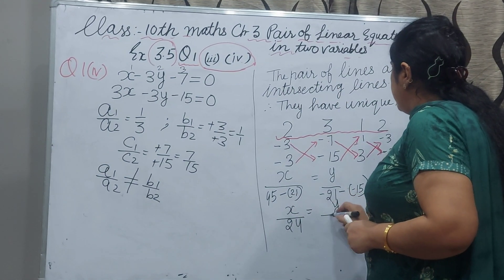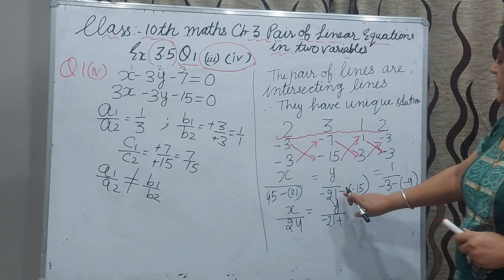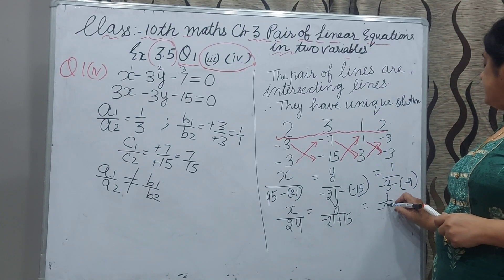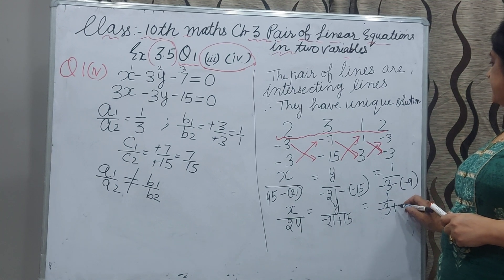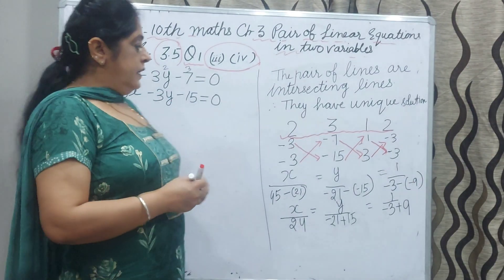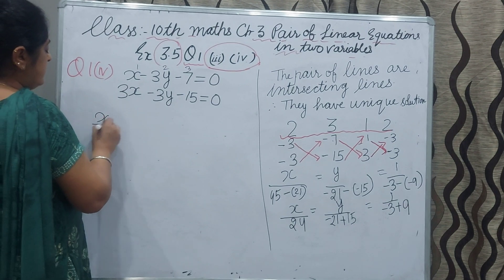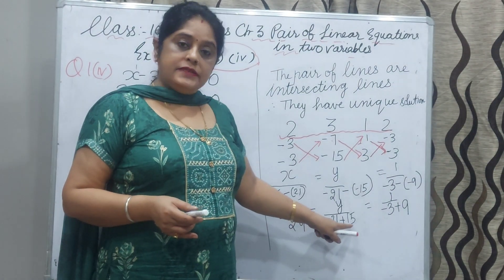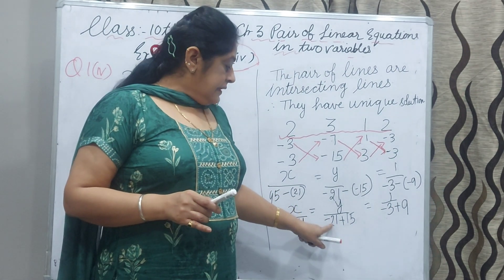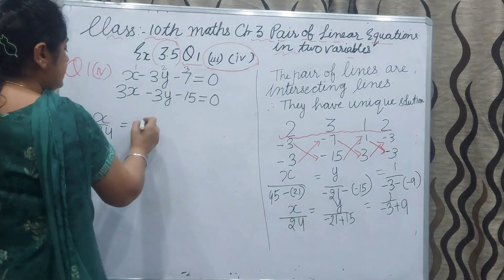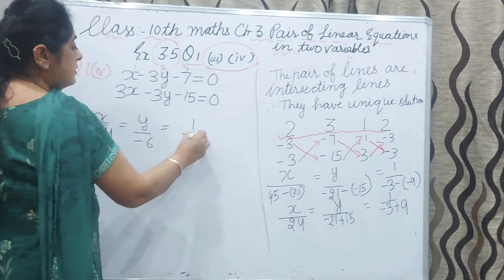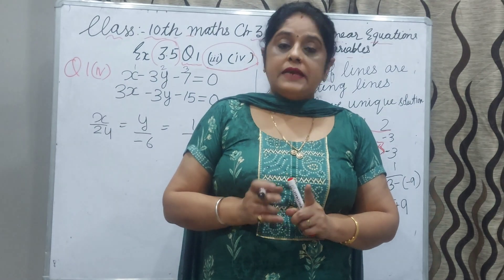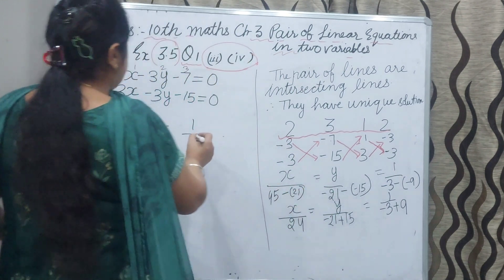For y, the numerator: minus 7 multiplied by 3 gives minus 21, then minus sign between them, and minus 15 multiplied by 1 gives minus 15. The outside minus changes the sign, giving plus 15. So minus 21 plus 15: opposite signs, we subtract, larger number is negative, so y numerator is minus 6. The denominator remains 6. So we have x upon 24, y upon minus 6, equal to 1 upon 6.